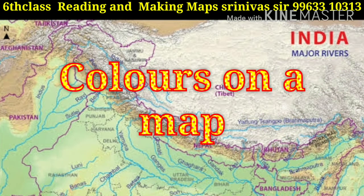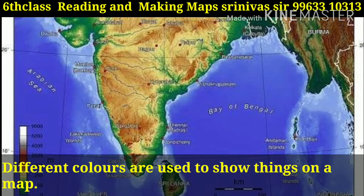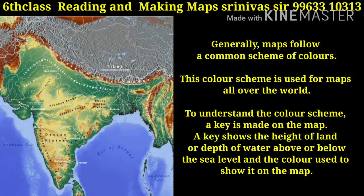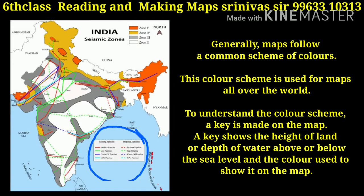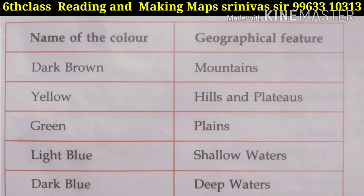Colors on a map: different colors are used to show things on a map. Generally, maps follow a common scheme of colors used all over the world. To understand the color scheme, a key is made on the map. A key shows the height of land or depth of water above or below sea level and the color used to show it. We can use different colors for different geographical features — for example, dark brown for mountains, yellow for hills and plateaus, green for plains, light blue for shallow waters, and dark blue for deep waters.